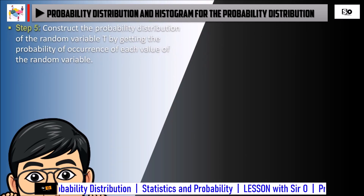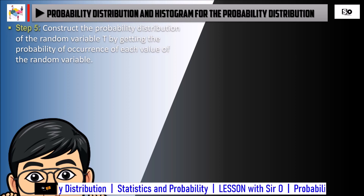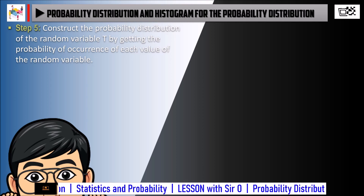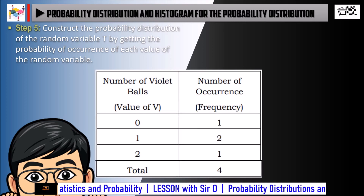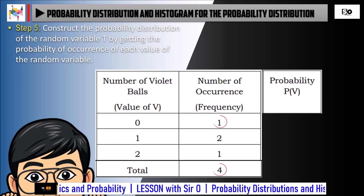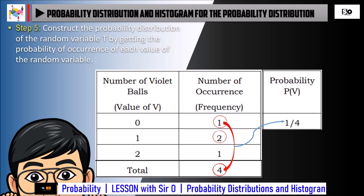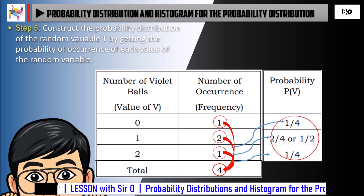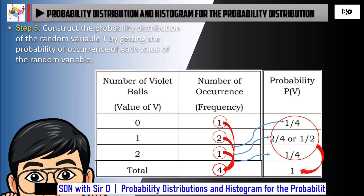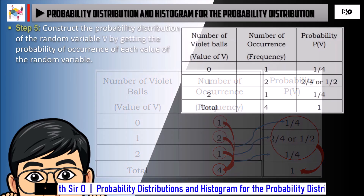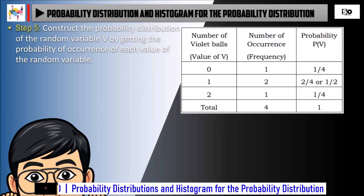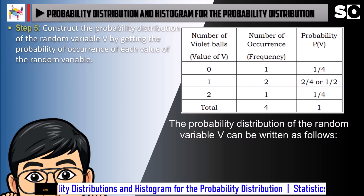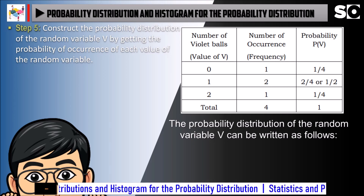Step 5: Construct the Probability Distribution of the Random Variable T by getting the probability of occurrence of each value of the random variable. Copy the table in Step 4 and add an additional column, which is the probability. The value will be the frequency over the total. For the total, add all the values in the probability column. We can now write the probability distribution of the random variable T. The probability distribution of the random variable B can be written as follows.